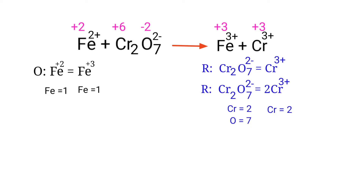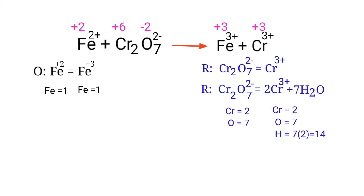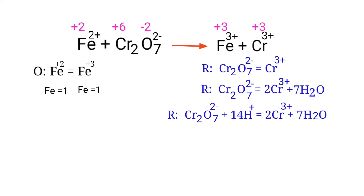The Chromium atoms are now balanced. Next, we need to balance the oxygen atoms; to do this we produce water molecules. The oxygen atoms are now balanced. Then we balance the Hydrogen atoms by producing H⁺ ions. Now the number of atoms are fully balanced in the reduction half-reaction.